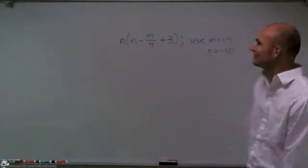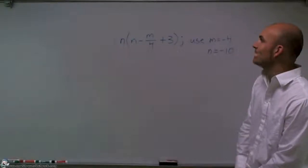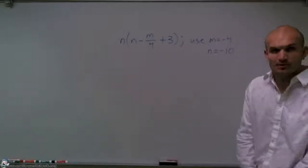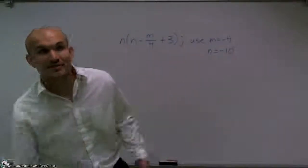All right, welcome. Today what I want to show you how to do is evaluate this expression: n times (n minus m divided by 4 plus 3). So the main important thing we need to understand is we have some variables and we have some values for those variables.